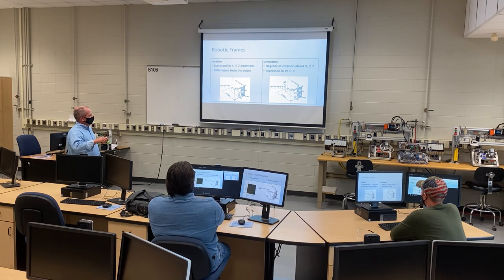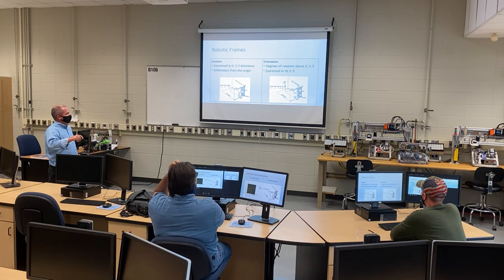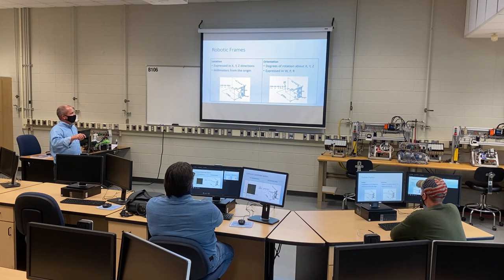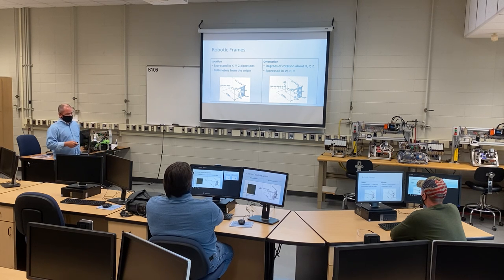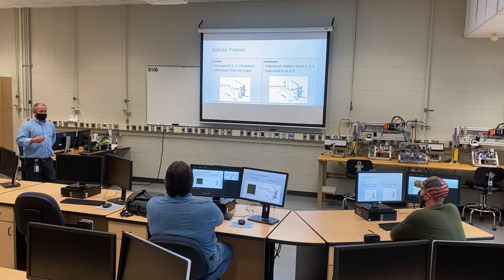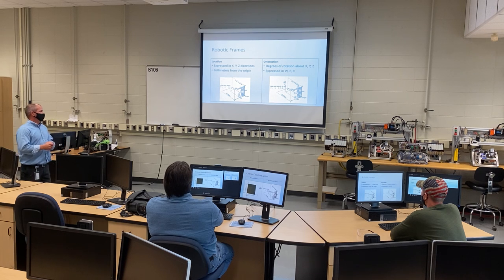This is just showing you an example of a location with a rotation about the P-axis, which is about the Y-axis. So you have X1000, Y500, Z500, W0, P of 45 — which means a rotation — and R of 0. When we get into our points or frames, you're going to have all of this information along with it, including W, P, and R.